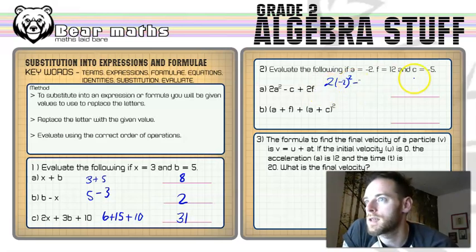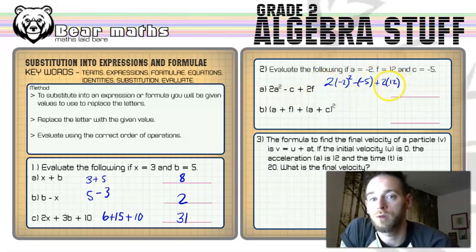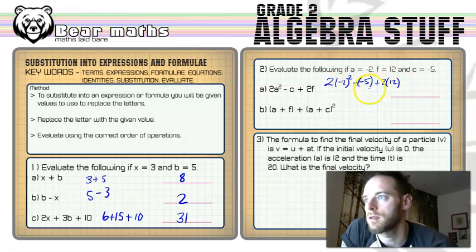All right, so then we've got minus the C value, so minus minus 5. In brackets there, the minus 5, I've substituted them for the place of the C. And then plus 2 multiplied by F, 2 multiplied by 12. Now that calculation, if you were able to type it into the calculator, that would get you the final answer, the correct one.